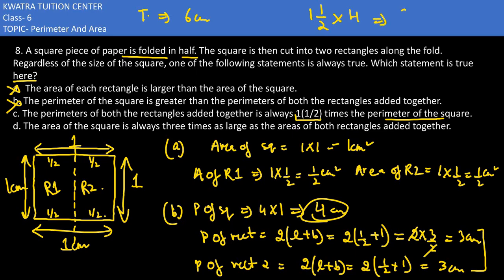So you solve 1 and 1/2. This would give you 3/2. 3/2 multiply 4. You would get 3/2 multiply 4, 6 cm would come. So we can understand that the perimeter of both the rectangles added together would be equal to 1 and a half times the perimeter of the square.